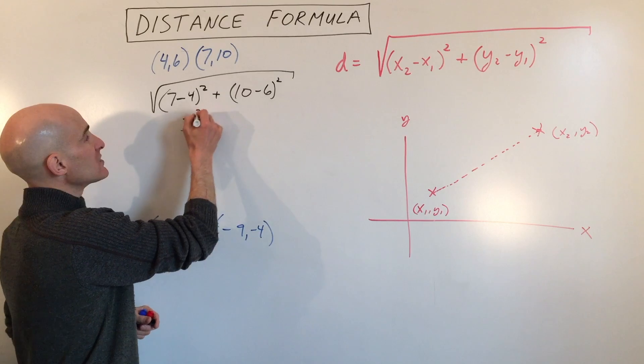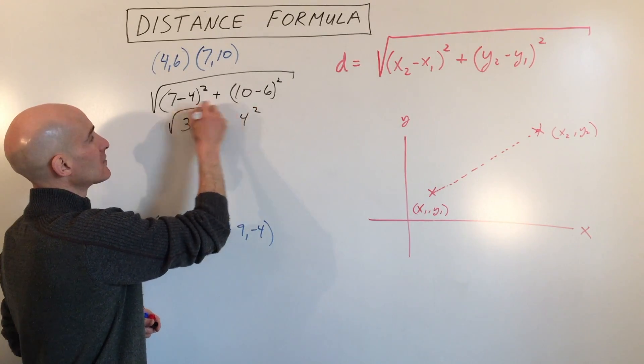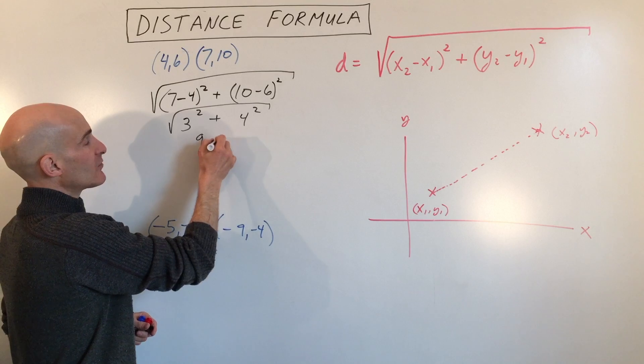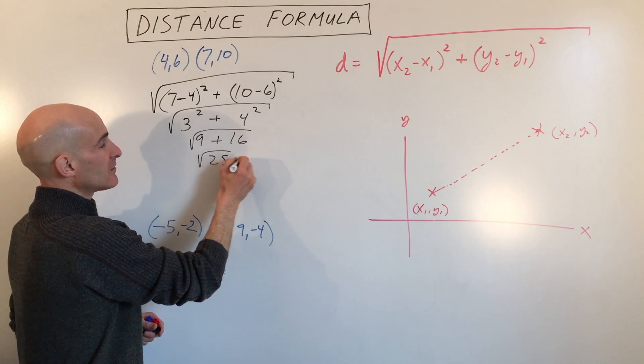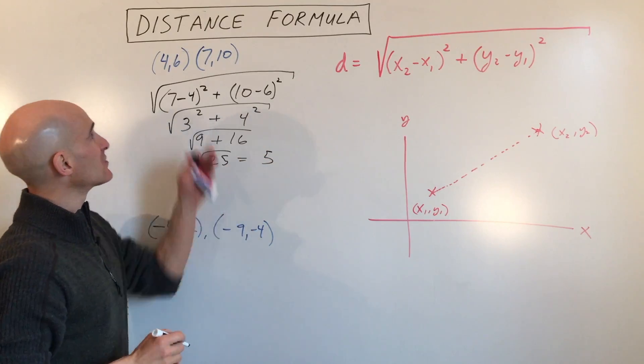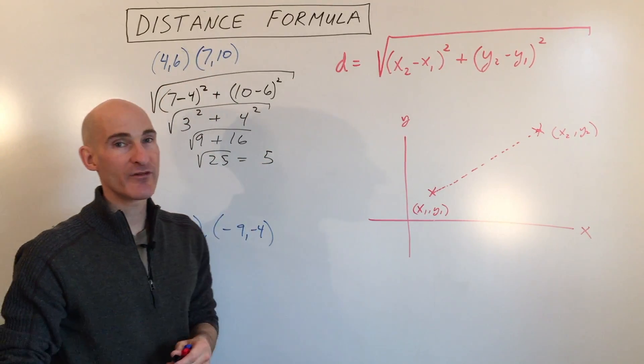So this is 3 squared plus 4 squared, which is 9 plus 16. That's the square root of 25, which equals 5. So the distance between these two points will be 5.